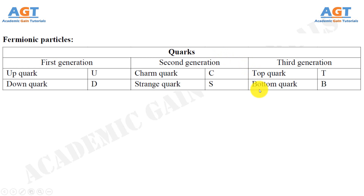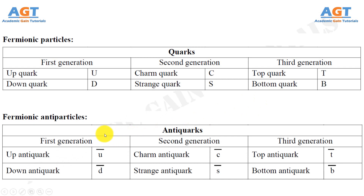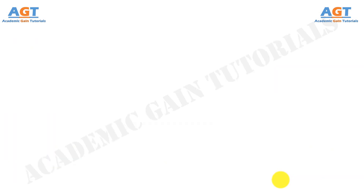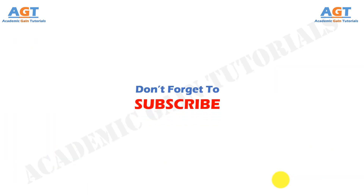And finally, the fermionic anti-particles called the anti-quarks: the first generation of fermionic anti-quark particles includes up anti-quark and down anti-quark. The second generation includes charm anti-quarks and strange anti-quarks. And the third generation includes the top anti-quarks and bottom anti-quarks. So, these were all about the elementary or fundamental particles and their classification, along with their anti-particles.